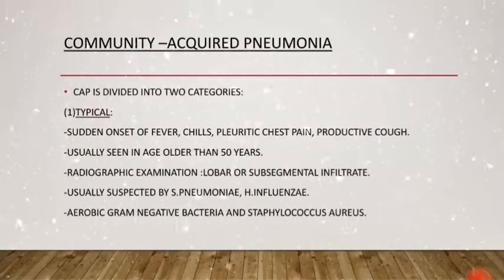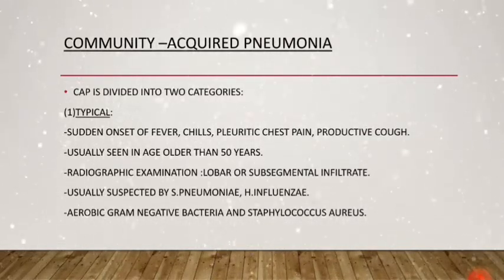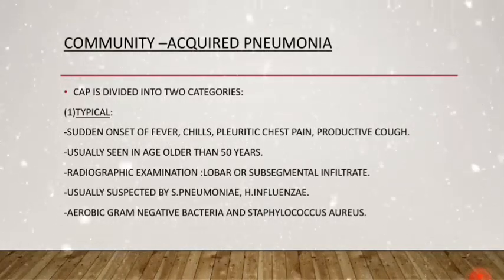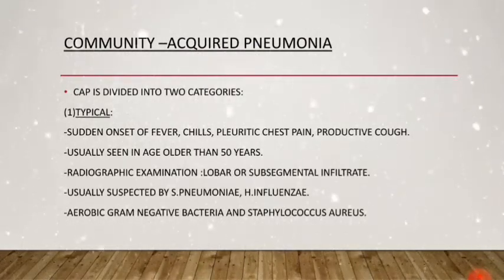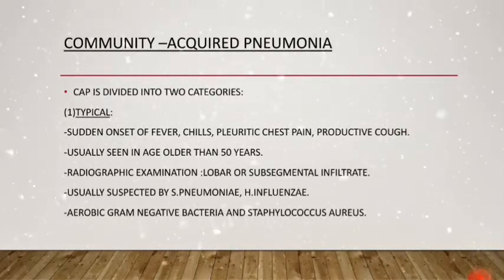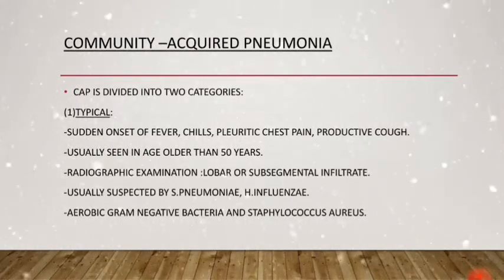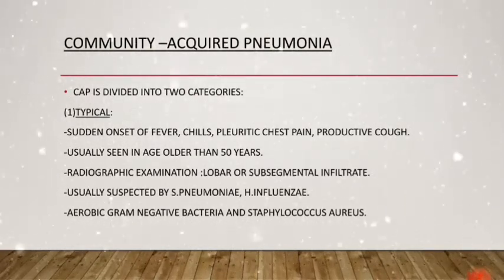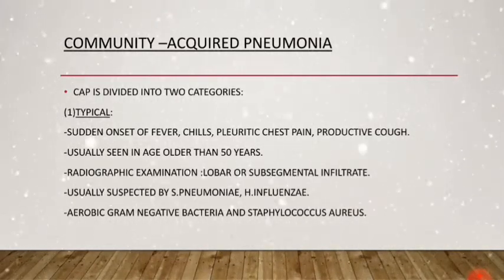Community-acquired pneumonia is of two categories. The first is typical community-acquired pneumonia, characterized by sudden fever, chills, pleuritic chest pain, and — most importantly — productive cough. It is usually seen in patients older than 50 years. Radiographic examination usually shows lobar or subsegmental infiltrates. It is typically caused by Streptococcus pneumoniae, Haemophilus influenzae, aerobic gram-negative bacteria, and Staphylococcus aureus.